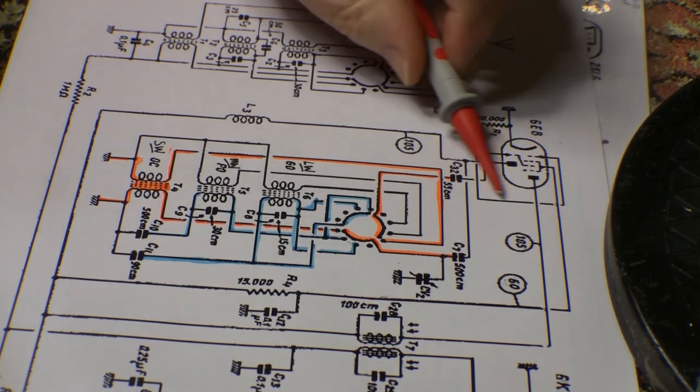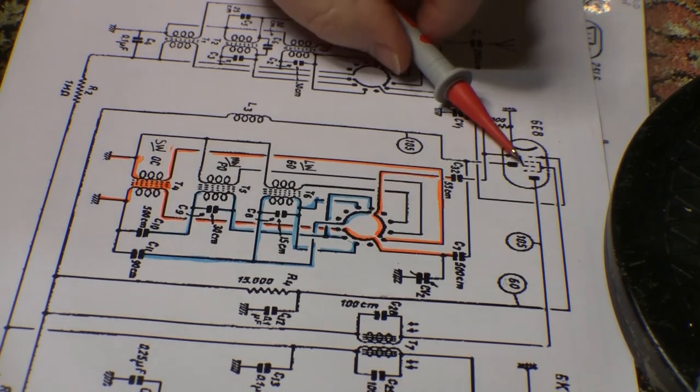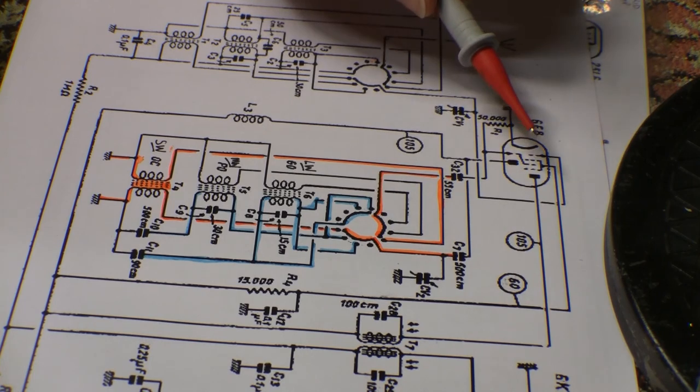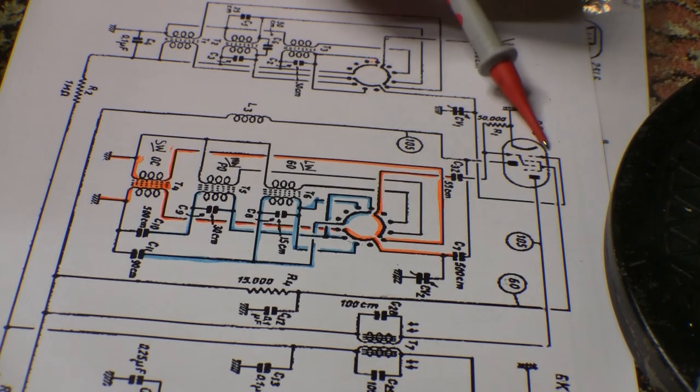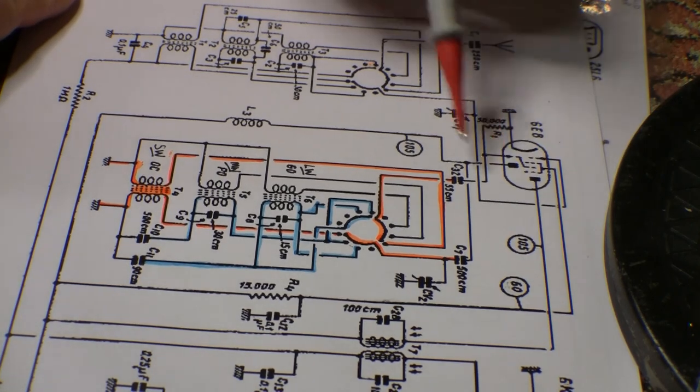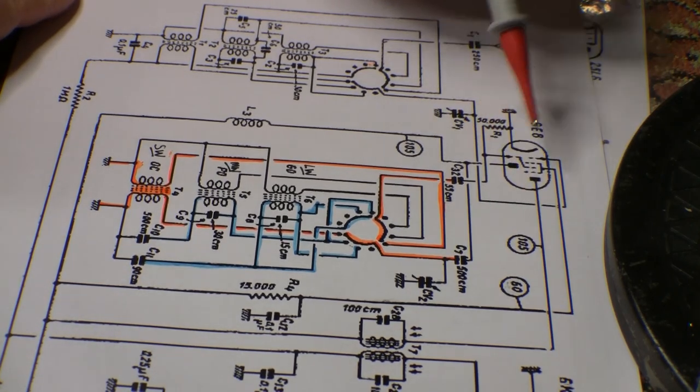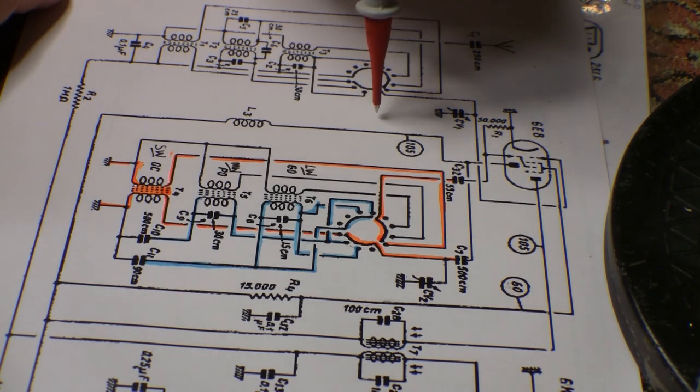The other thing I did is I swapped out the valve. Since I have a second set, it's not the valve because both valves work in the working set, neither valve works in the rebuild set. So that's pretty much writes that off as a problem. Voltages generally look okay.